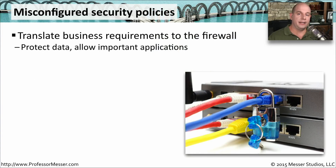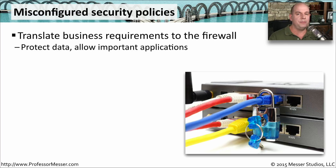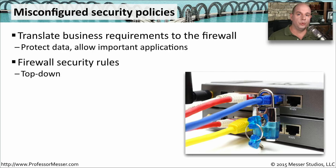Once your firewall is up and running, the connectivity is correct, your routing tables are fine, and you're logging information as expected, now we need to look at how the security policies themselves are configured. You have to take the business requirements given to you and translate those into a form that the firewall can process — protecting the data inside your organization while also allowing people to pass through the firewall to perform their jobs. Firewall rules are evaluated from the top rule all the way to the bottom, followed in order.